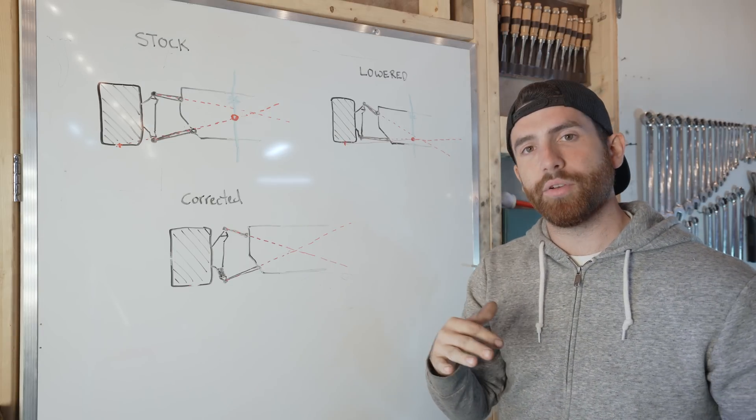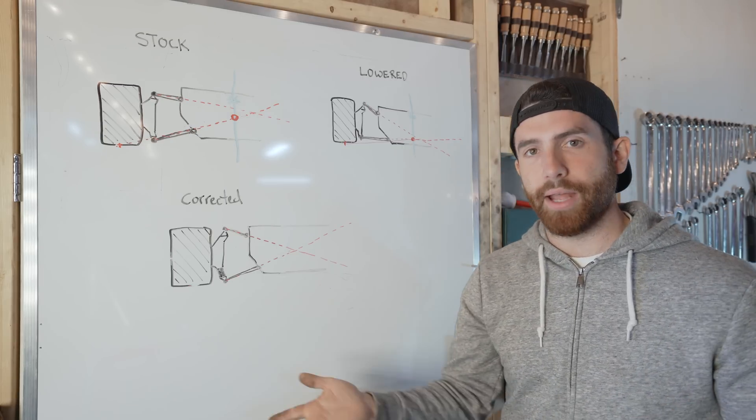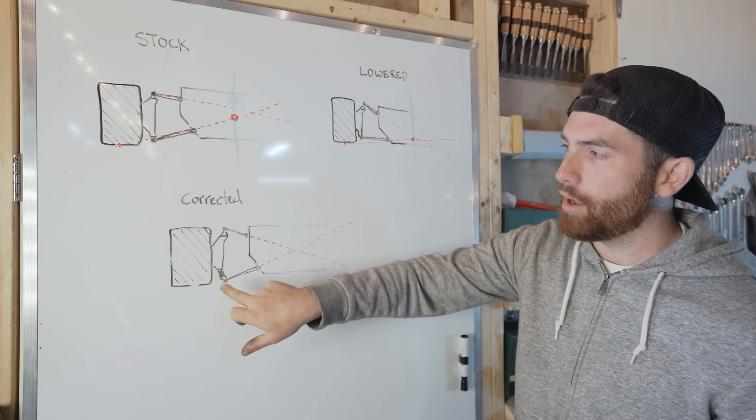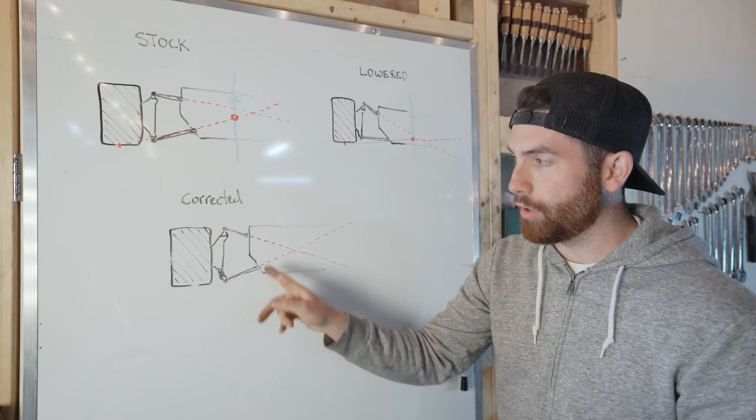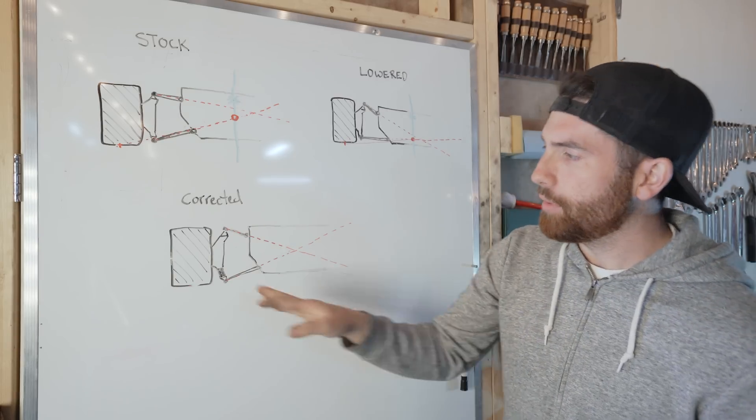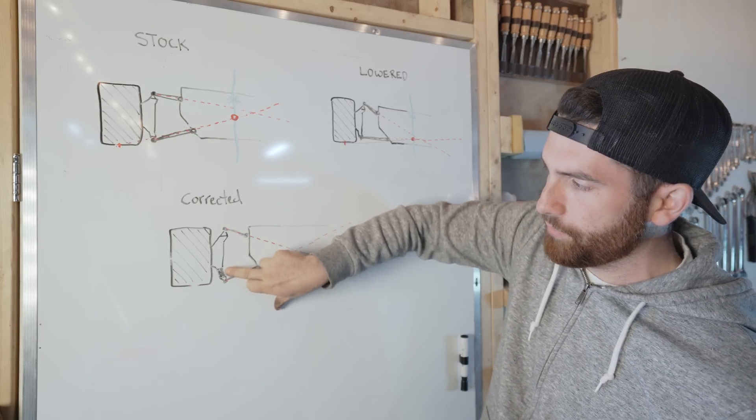So the best way to do it is you want your center of gravity to be lowered, but you also want your roll center to be as close to that new center of gravity as possible. How do we do that? We affect our roll center by adjusting the point at which the control arms meet the hubs.